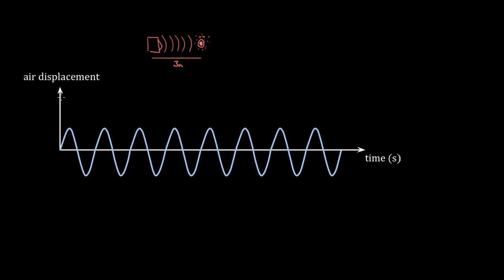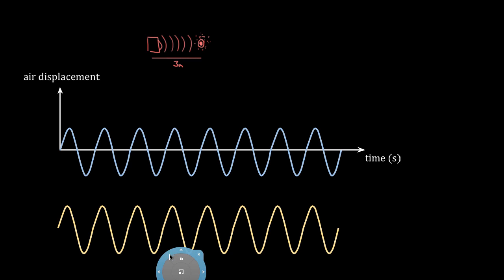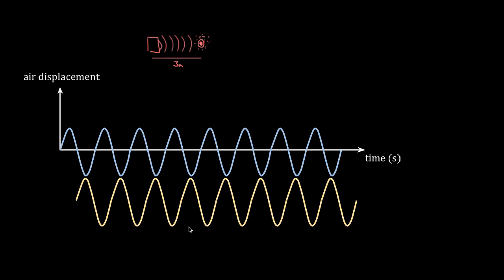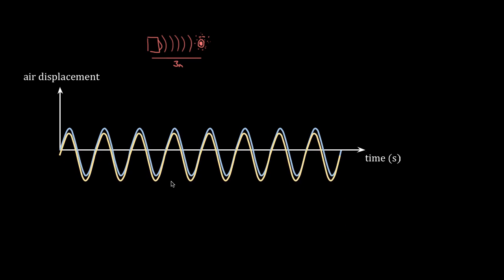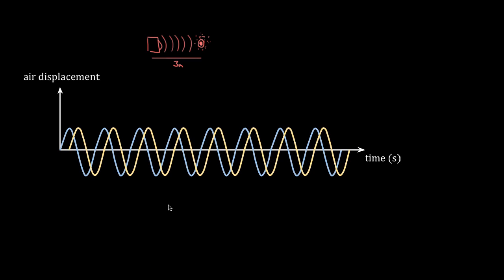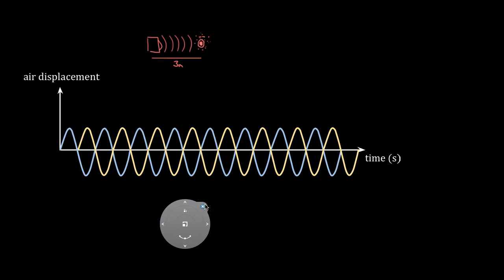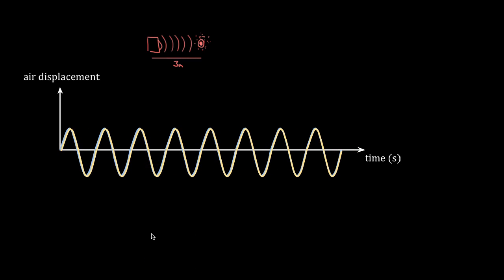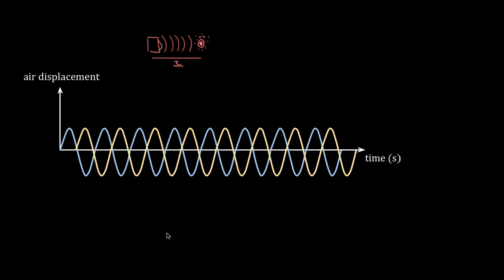If you overlap two waves that have the exact same period — peaks lining up with peaks — that's constructive interference. The note would get louder and stay loud the entire time. And if you shifted one speaker so it was out of phase, you'd get destructive interference — a softer or even silent note that stays destructive. So if you overlap two waves of the same frequency, it stays constructive or stays destructive.